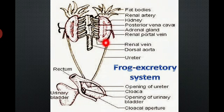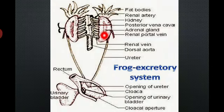Mesonephros is a temporary kidney, also found in reptiles, birds, and mammals in the terrestrial area. The third type is metanephric kidney — metanephric means it is a permanent, well-functional kidney, present in higher vertebrate groups of organisms.